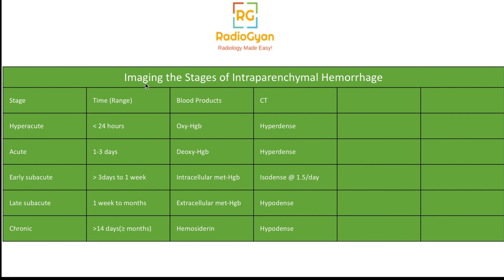On CT, acute and subacute blood appears hyperdense — that's how we commonly see basal ganglia hemorrhages in hypertensive patients. As the clot starts degrading from the periphery toward the center, hypodensity also begins at the periphery and moves inward.